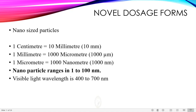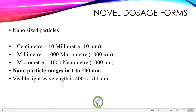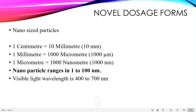For example, visible light has a wavelength of around 400 to 700 nanometers. So we can say that nanoparticles are far smaller — much smaller — than the wavelength of visible light. This is quite an interesting fact.